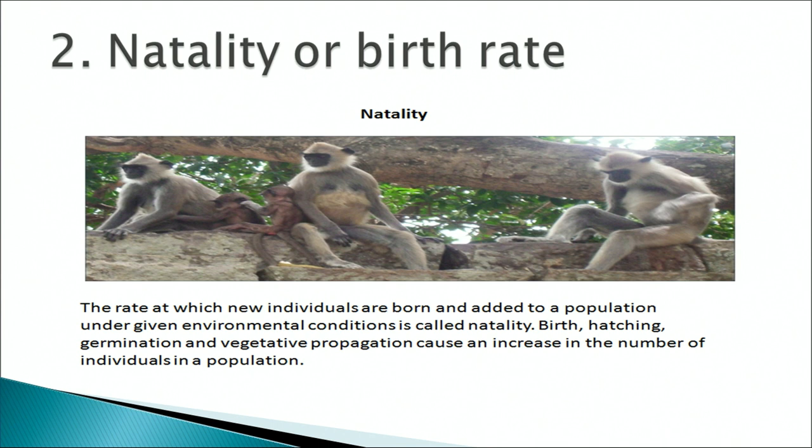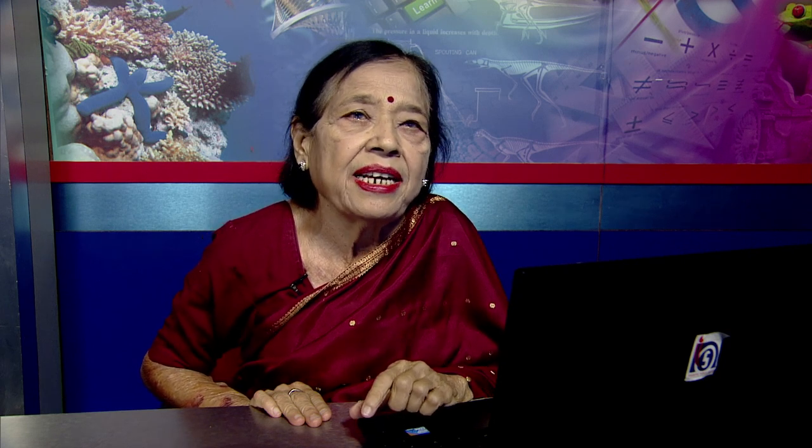Birth, hatching, germination and vegetative propagation cause an increase in the number of individuals in a population. Next is mortality, or death rate. Loss of individuals from a population due to death under a given condition is called mortality, obtained by calculating the death rate in a population. In this slide you can see many dead organisms.